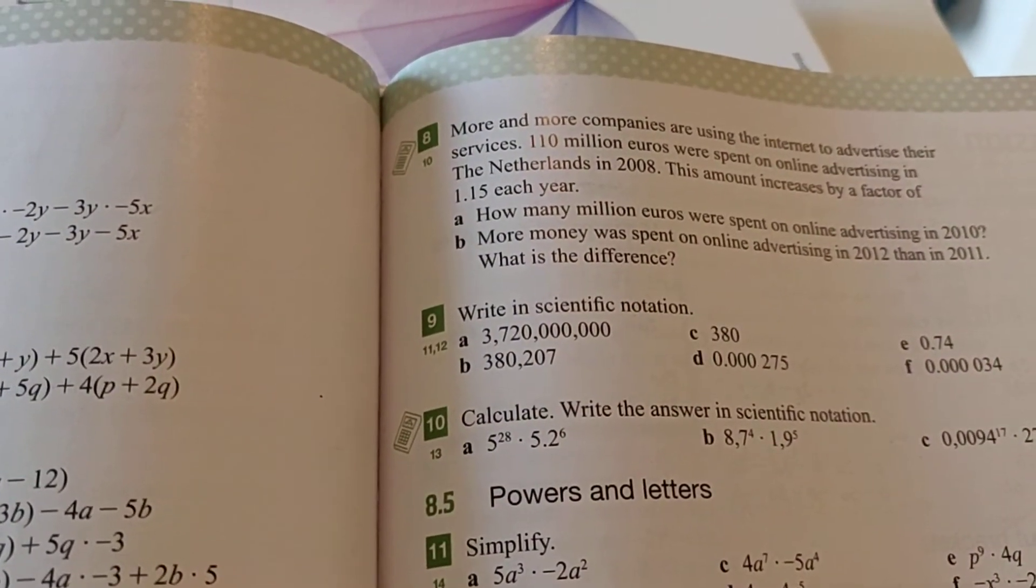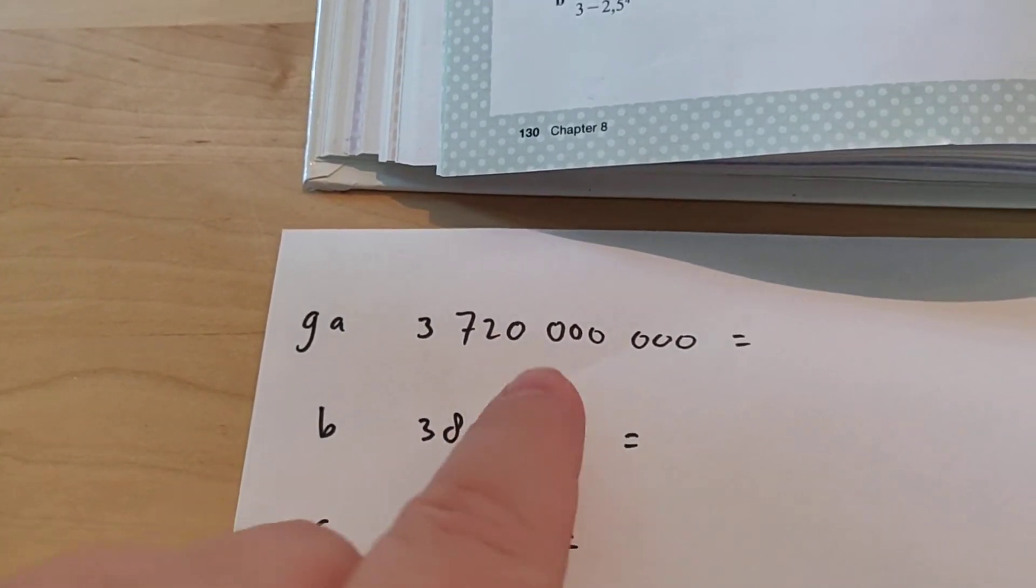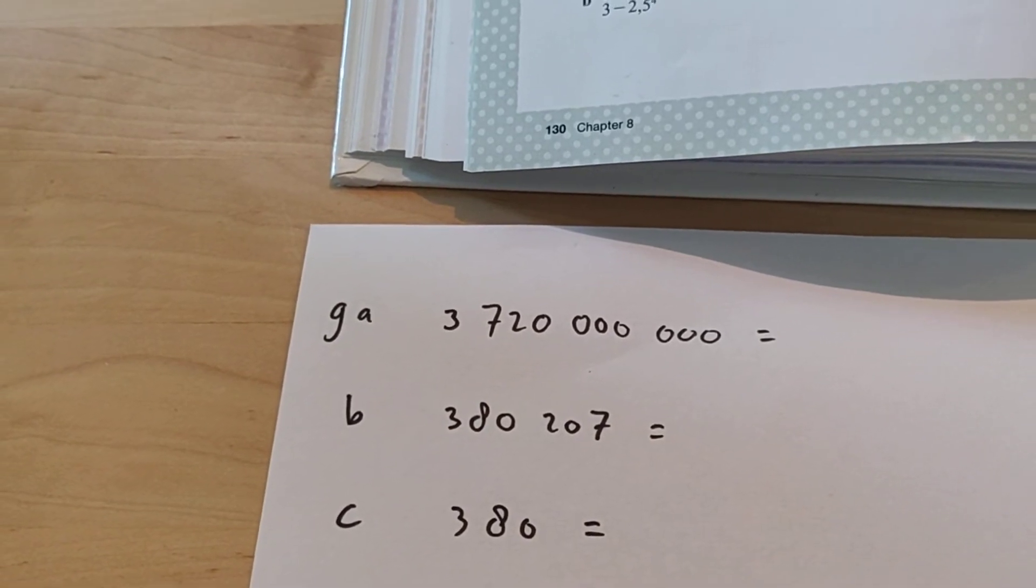So what I usually do is I just ignore them. When I write down a number, like with 9a, we have a very big number with three commas in it. I just write it down like this, so there are no commas. I do leave a bit of space in between, so you can easily count the zeros.